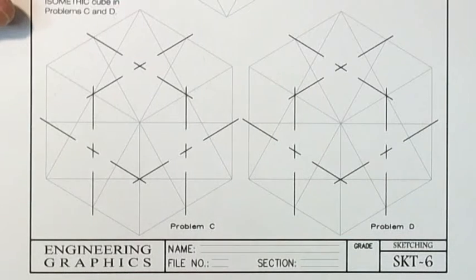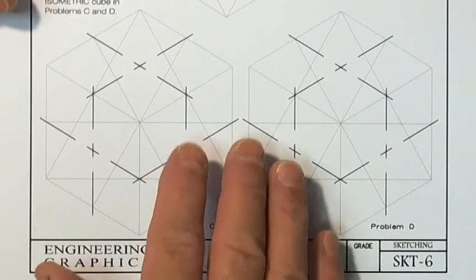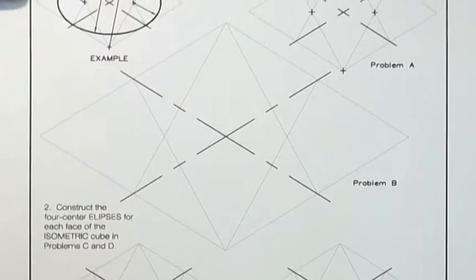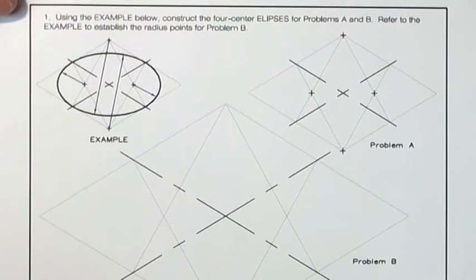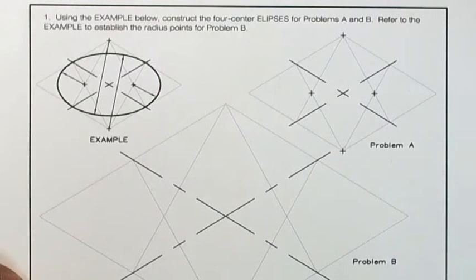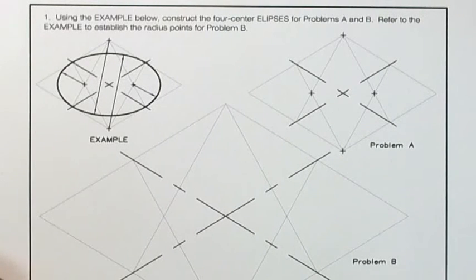We'll begin with sketch 6. The importance of this plate is that it shows us how to draw elliptical shapes representing round shapes. We want the elliptical shape to appear in our isometric view, representing the circular shape from our orthographic view.